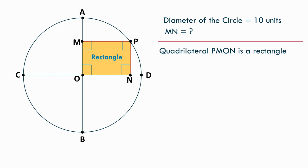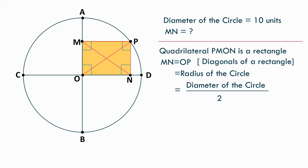Now, we know that the diagonals of a rectangle are equal. This means, if we construct a line OP here, it will be equal to MN. And interestingly, OP is the radius of the circle. So, it will be half of the diameter, which will be half of 10 units, which will be 5 units.